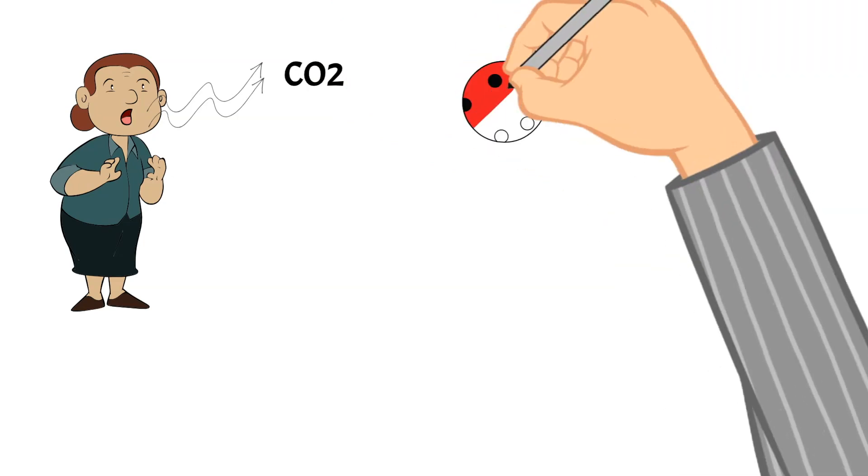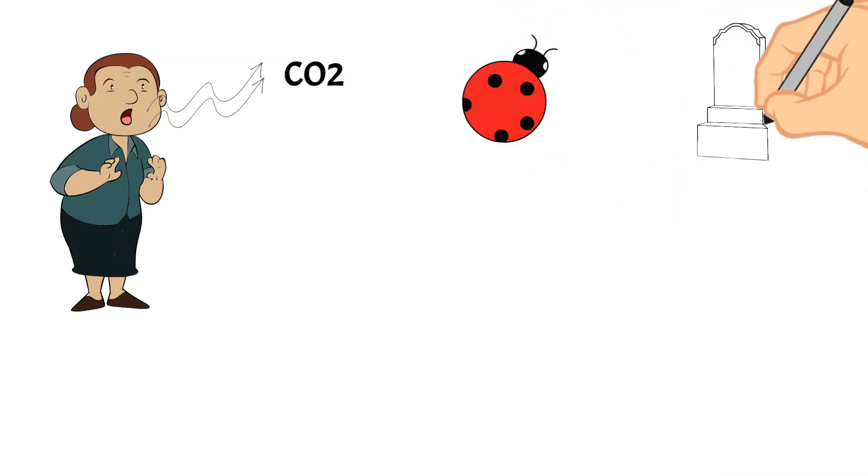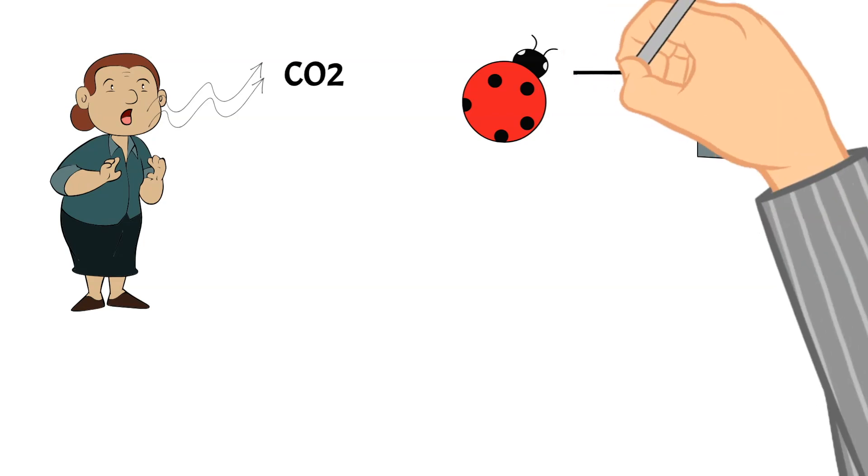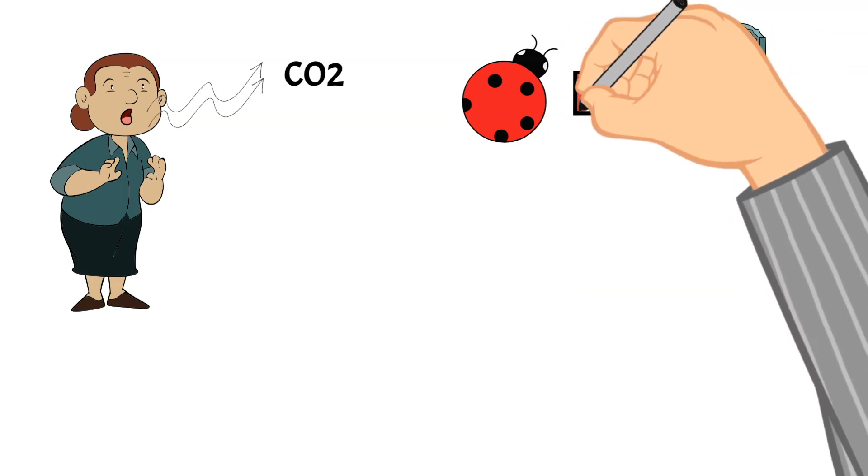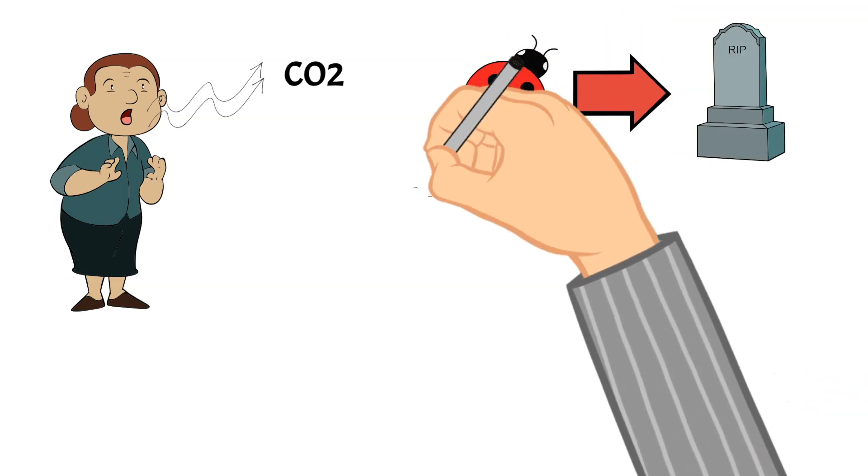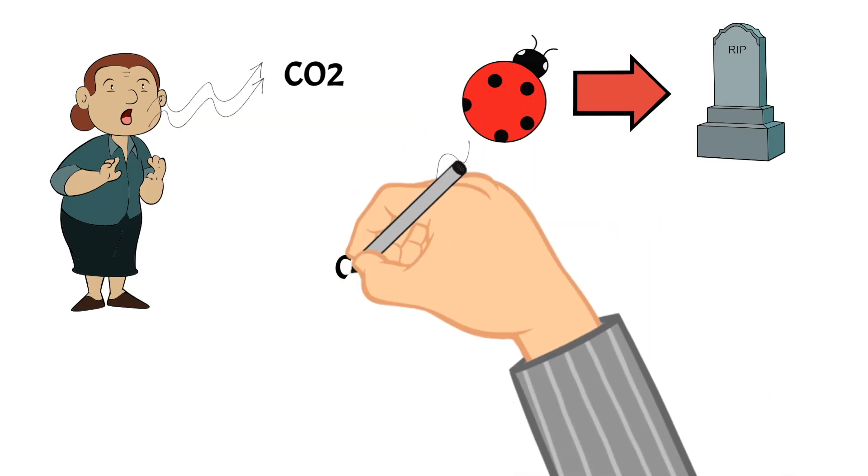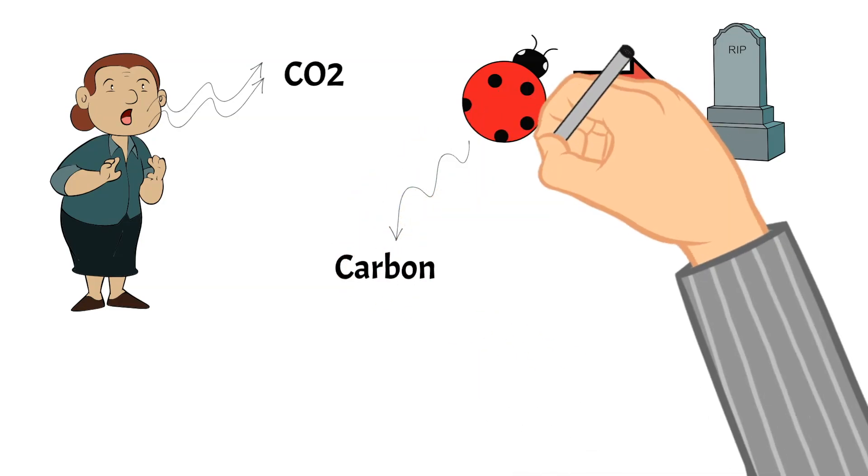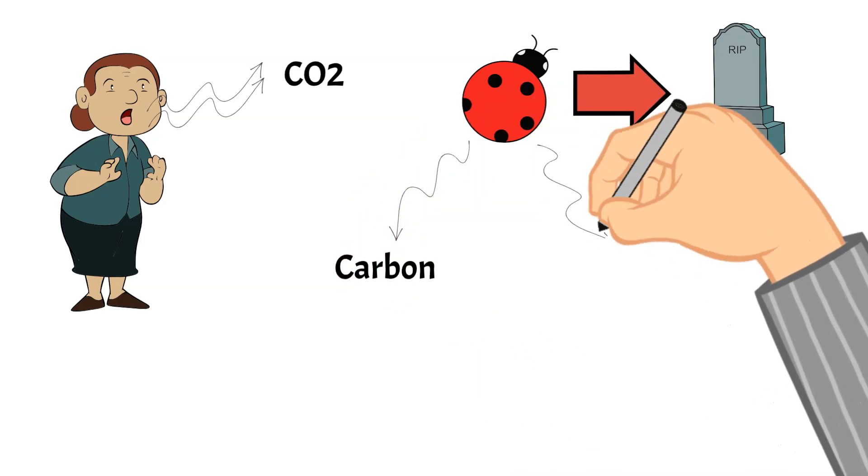Another place we see carbon in the world is when plants and animals die and then they decay. When this happens, the carbon that is in their body is released either into the atmosphere or stored in the ground.